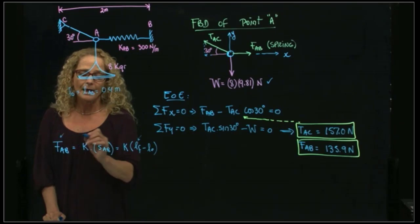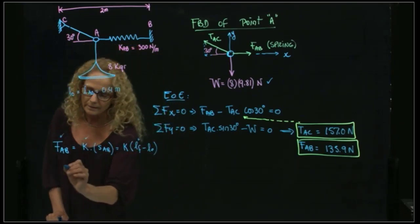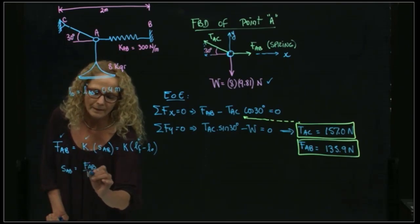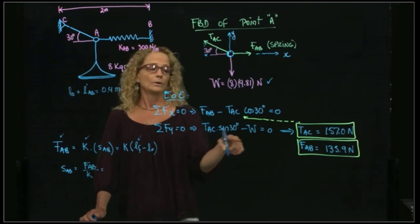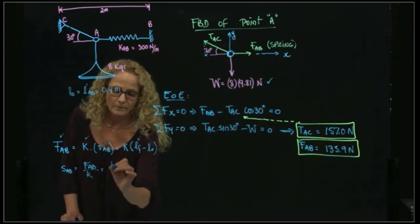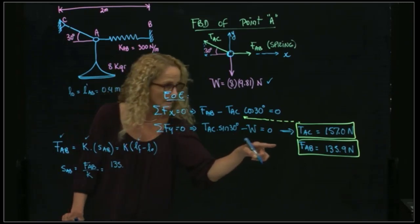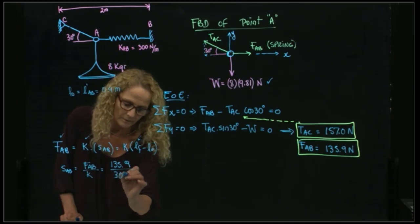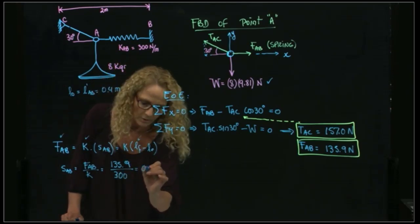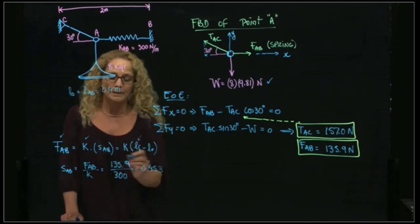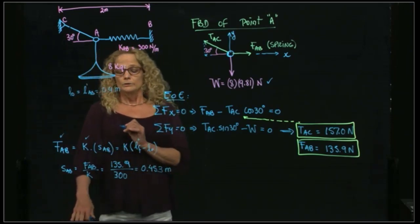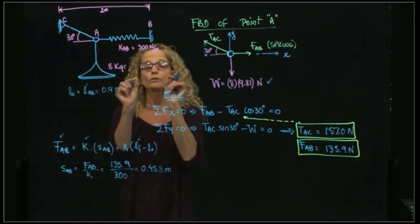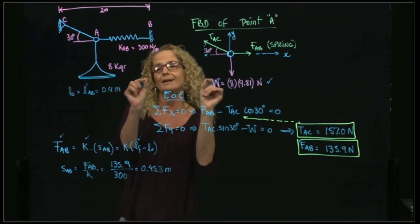So since we have this force and we have K, which is given, we can find sAB, which is the force of the spring divided by K. We already know that this force is 135.9, and we divide it by 300, and I get a value of 0.453 meters. So this is what I have stretched this spring from its unstretched position to the final length.